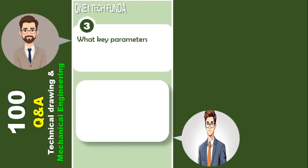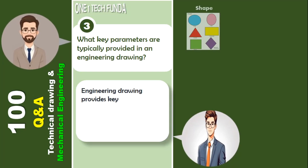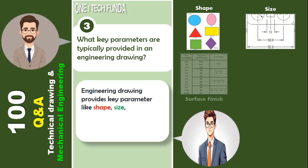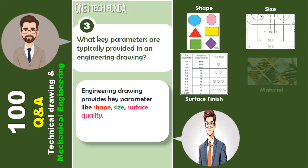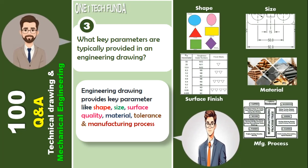What key parameters are typically provided in an engineering drawing? Engineering drawing provides key parameters like shape, size, surface quality, material, tolerance, and manufacturing process of the object.